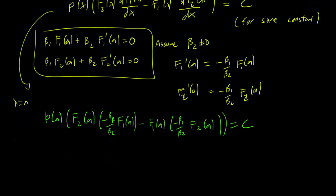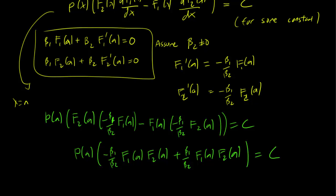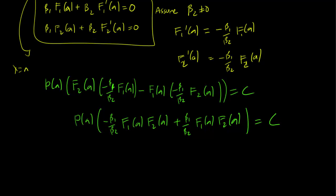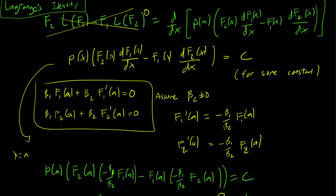And this implies that p a minus beta1 over beta2 f1 a f2 a equals c. However, these terms cancel out over here. This goes to 0, and we're left with c equals 0, and c is a constant, it doesn't depend on x, so this c must also have been equal to 0.